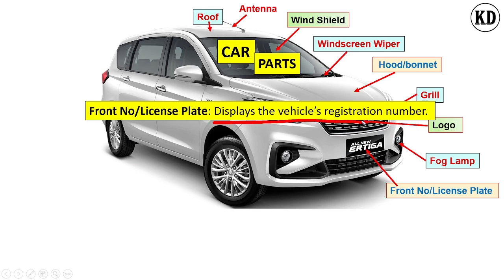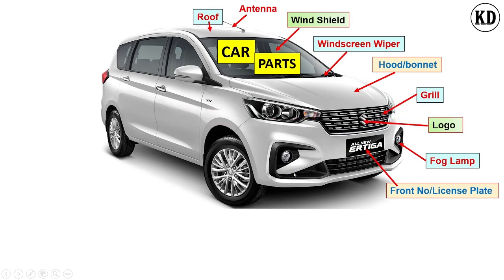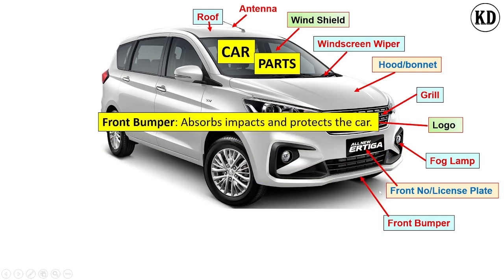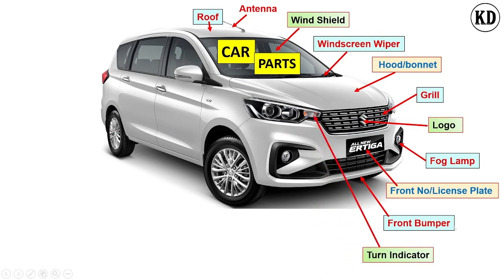The function of the license plate is to display the vehicle registration number or information with the government. The next component name is the front bumper. Its function is to absorb impact and protect the occupants or passengers.